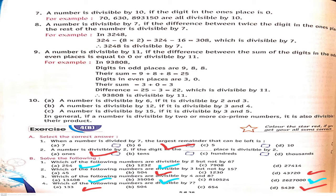For example, take 93808. The digits in odd places are 9, 8, 8 — their sum is 25. The digits in even places are 3 and 0 — their sum is 3. The difference is 25 minus 3 equals 22. Since 22 is divisible by 11, the number 93808 is divisible by 11.